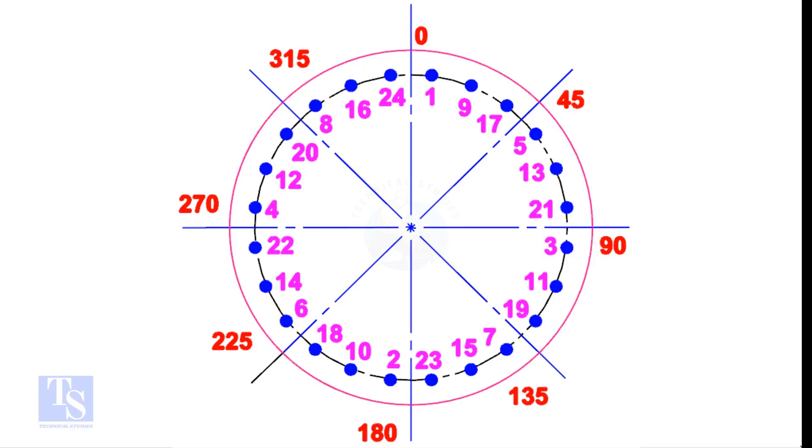For larger flanges, divide the bolts into 8 equal groups. Apply the same method. The difference between the two nearest holes will be 8.